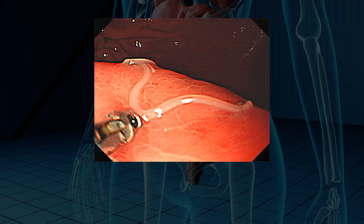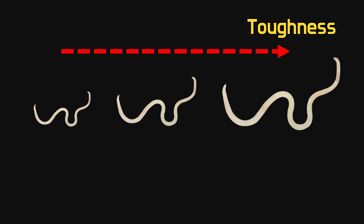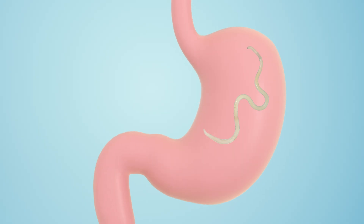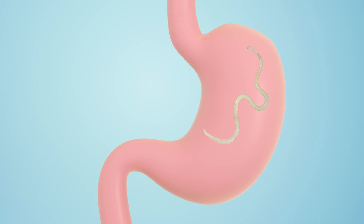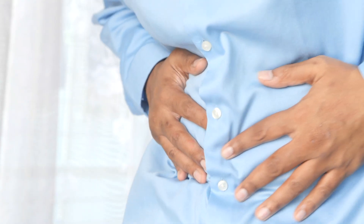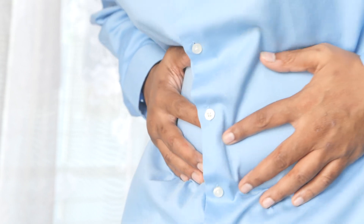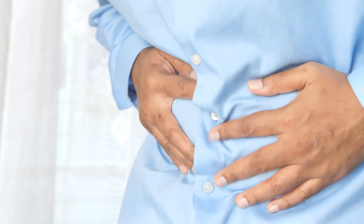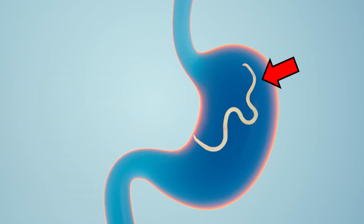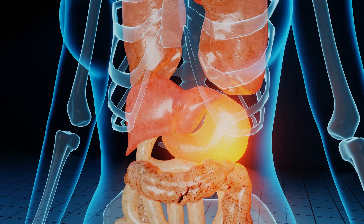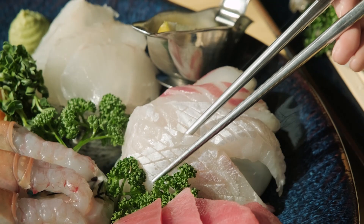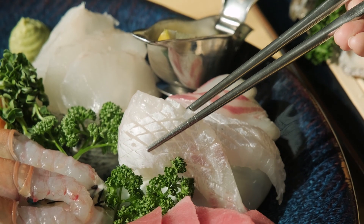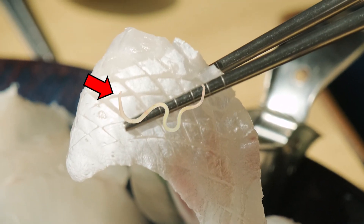Interestingly, because the guts of marine mammals are somewhat similar to those of humans, Anisakis can potentially infect humans as well. Due to the increasing toughness of Anisakis's epidermis as it grows, they can survive in the human gut without being digested. Fortunately, the human body is not an ideal environment, so they typically don't live for extended periods. However, infection can lead to symptoms like abdominal pain, vomiting, and allergies, so caution is advised when consuming raw seafood.